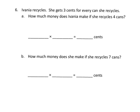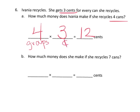Ivania is recycling and she gets three cents for every can she recycles. How much money does Ivania make if she recycles four cans? In my mind this is four times three, which equals twelve cents, because we have four groups of three pennies. How much money does she make if she recycles seven cans? In that case it's seven times three, which is twenty-one cents.